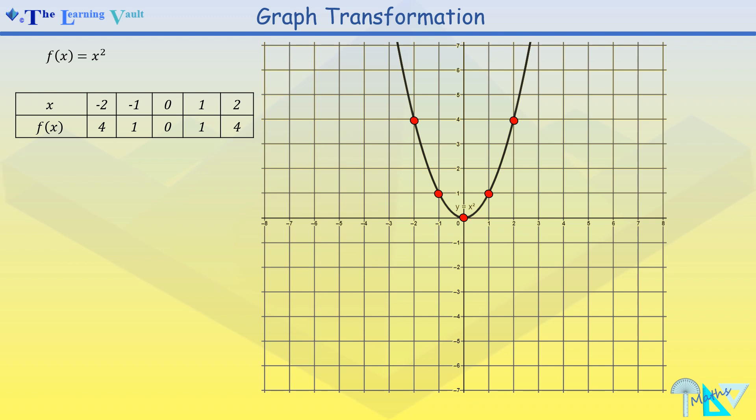Now in plotting our new function which is f of x minus 3 we'll complete our table. So doing so we'll put in the values accordingly and now we'll plot our points. And now we sketch our curve.